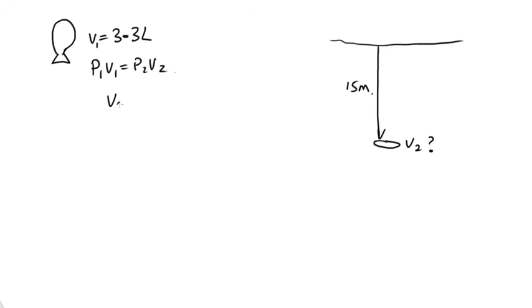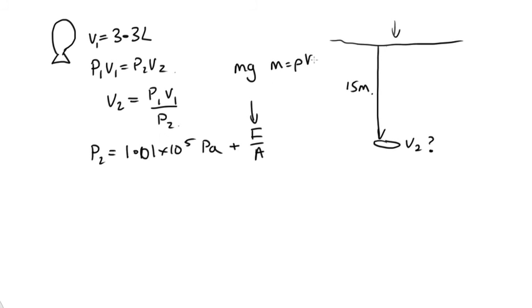And so V2 is going to be P1 V1 over P2. So what we need to do is work out the pressure down here. So the pressure down there is going to be the atmospheric pressure, which is pushing down on the surface of the lake. That's just caused by the Earth's atmosphere, and so it's 1.01 times 10 to the 5 pascals. That's one atmosphere of pressure. Plus, we're also going to have the force over the area. Now, the force acting on the balloon is the weight of the water above it. So this will be mg. And m is going to be equal to rho times the volume, which will be rho times the surface area, the cross-sectional area, times the depth. Let's call that d.